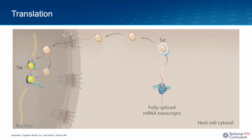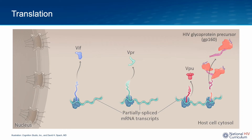Similarly, HIV TAT is also shuttled back into the nucleus, where it binds to the HIV DNA and increases the efficiency of HIV transcription. The partially spliced HIV mRNA transcripts are used to synthesize the HIV accessory proteins VIF, VPR, and VPU.